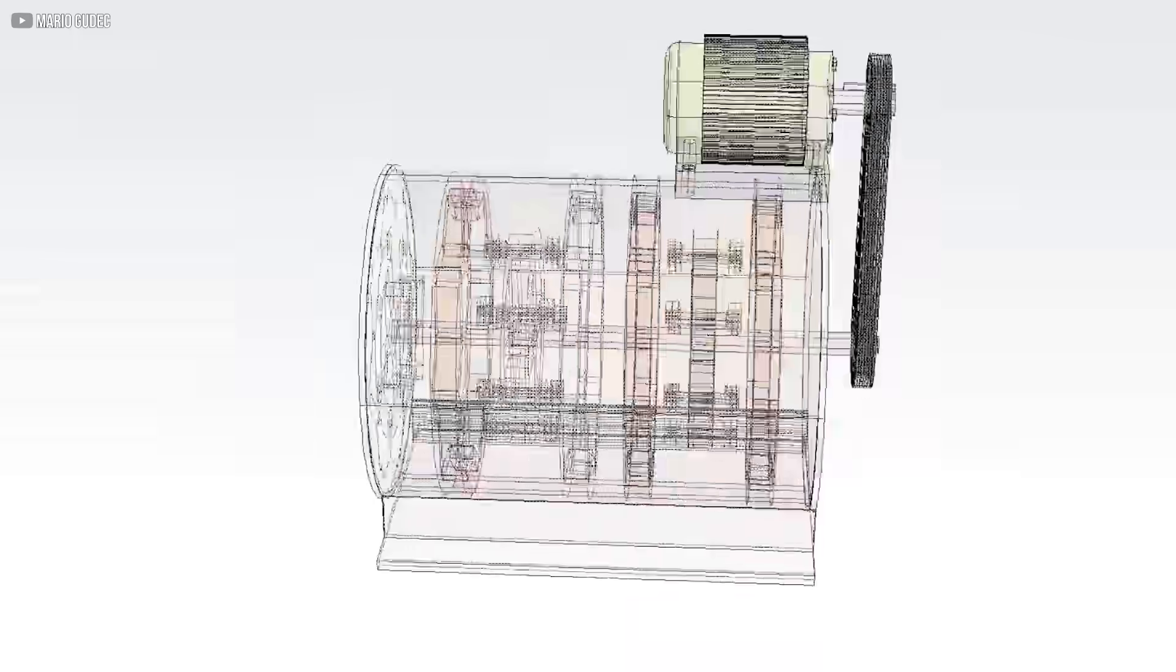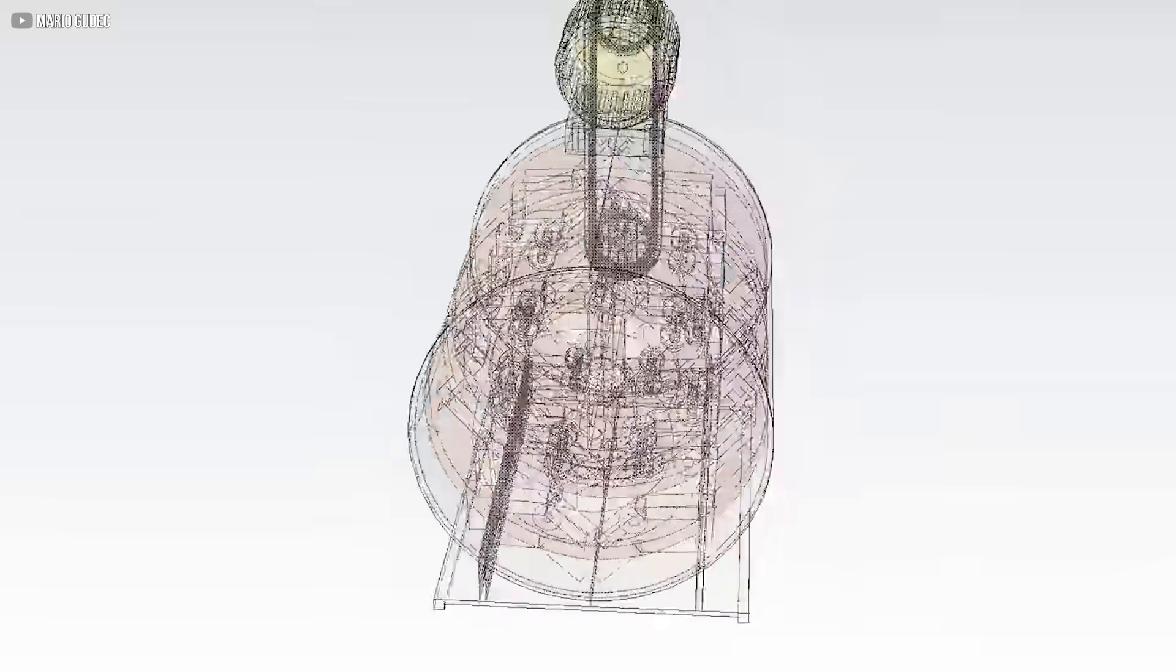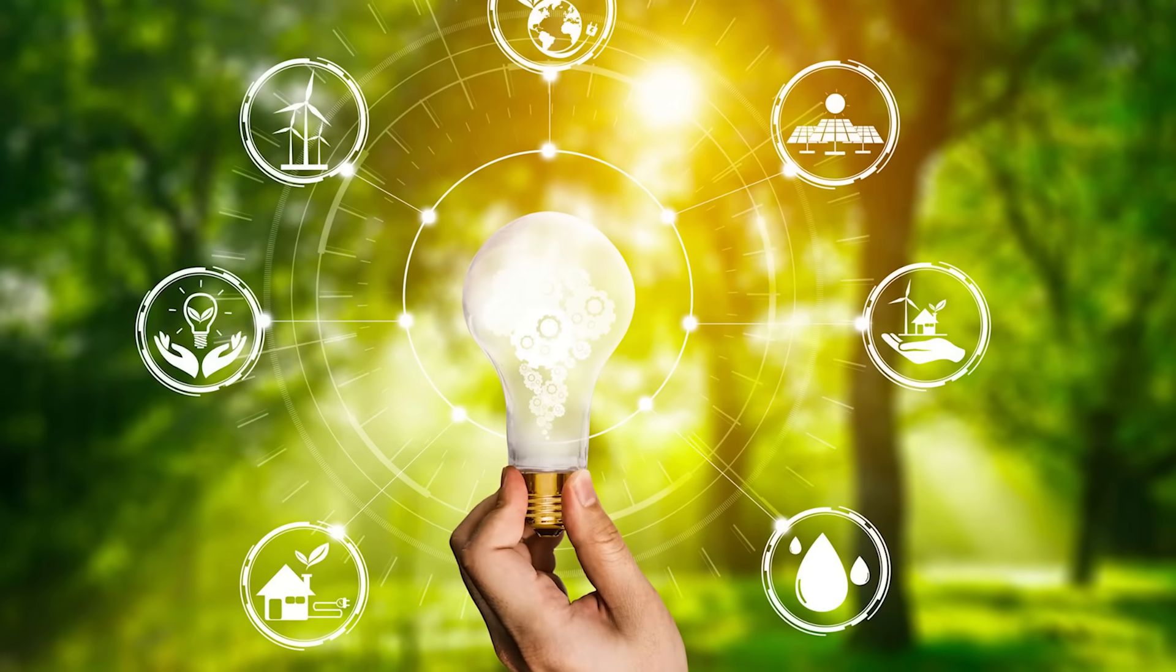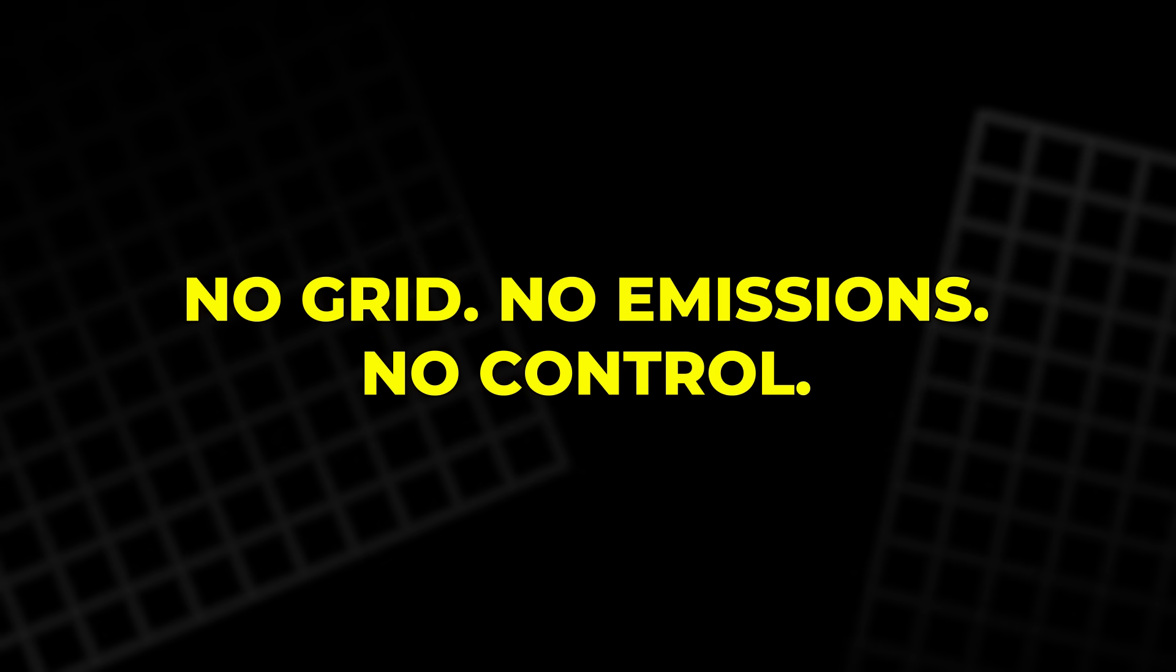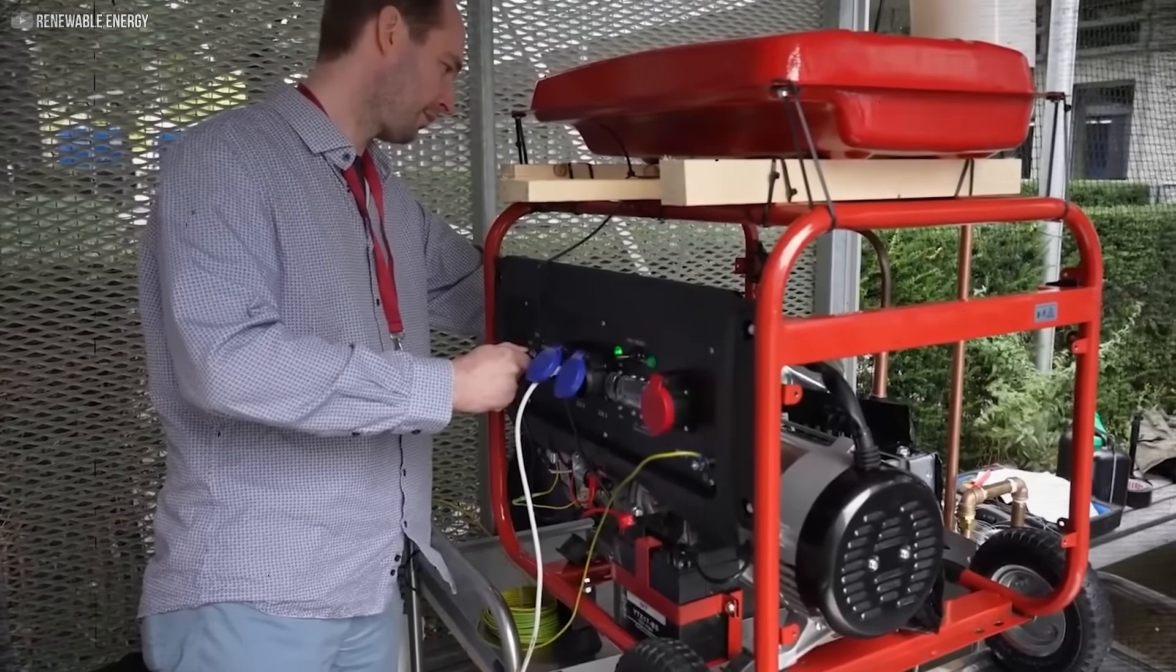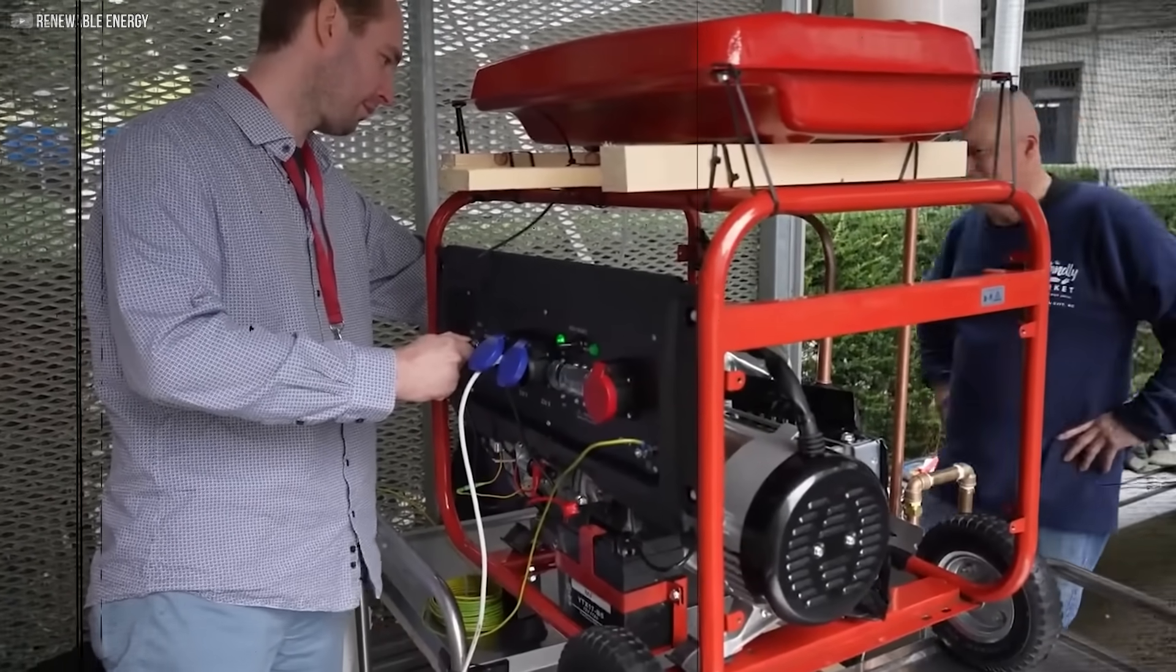Johnson wasn't just building devices, he was creating a blueprint for global energy independence. No grid, no emissions, no control. If scaled and shared, his machines could have ended energy poverty and reshaped civilization. And that's when the resistance began.